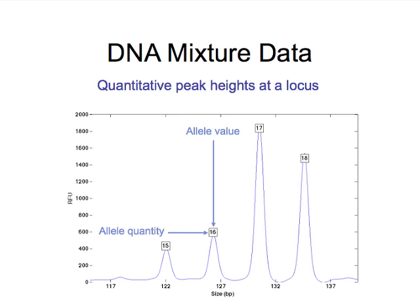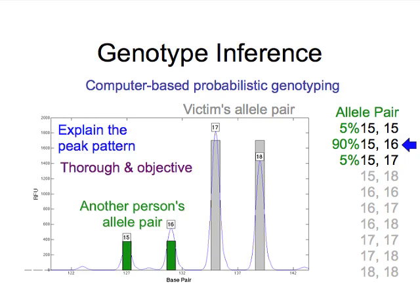DNA mixture data — unlike the other talks you've heard — uses all the quantitative data. We consider the peak heights. Here, for example, is a mixture. Along the x-axis we see what the allele is, increasing in size. The y-axis gives an indication of allele quantity, so the peaks on the left have about a third of the quantity of the peaks on the right.